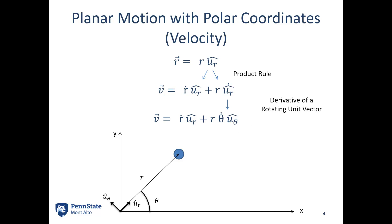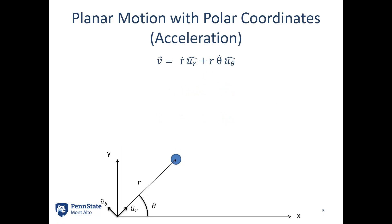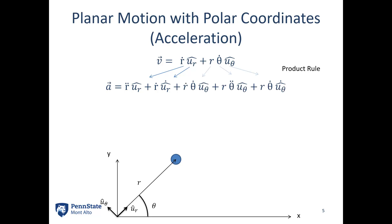Moving on to acceleration, we take the derivative of velocity. There are multiple product rules here. For the first term, r-dot and ur both can change over time, giving r-double-dot times ur plus r-dot times ur-dot. The second piece is actually a triple product rule because r can change over time, theta-dot can change over time, and the u-theta direction changes over time as well.